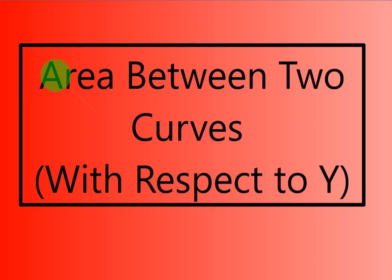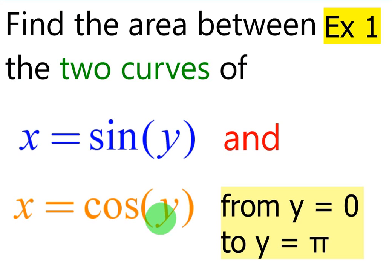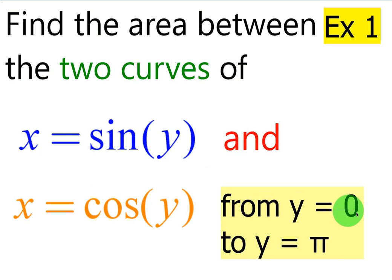Now let's take a look and find the area between two curves with respect to y. We just looked at it in terms of x. This one's going to be a little bit more advanced. Example 1: find the area between the two curves x equals sine of y and x equals cosine of y, from y equals 0 to y equals pi.